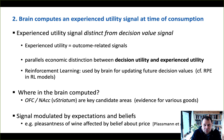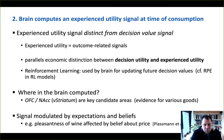These are signals that are related to outcomes. So when the monkey receives a juice reward, he or she computes a prediction error — that is an outcome-related signal. Experienced utility, or the signal that the brain computes when it experiences the outcome of its decisions, parallels the economic distinction between decision utility and experienced utility.